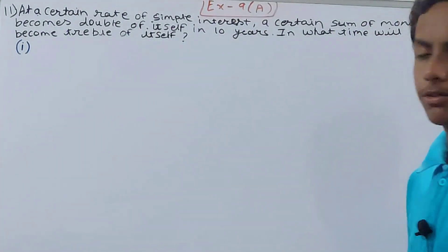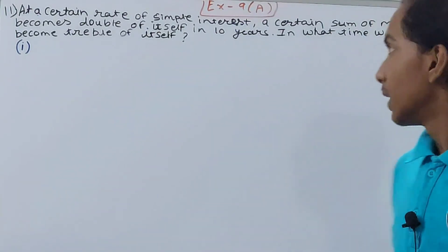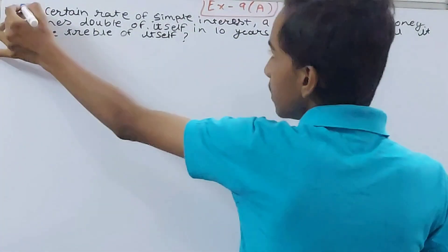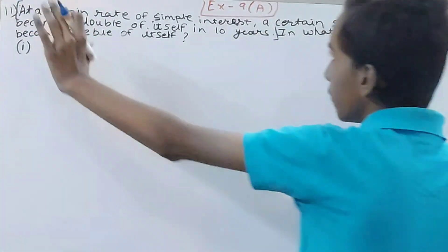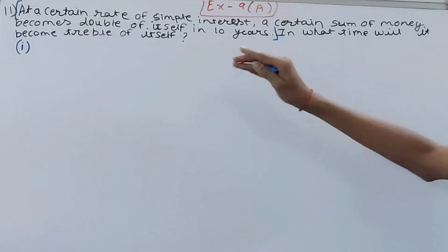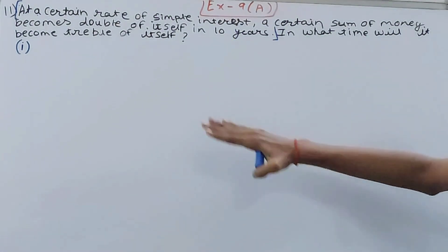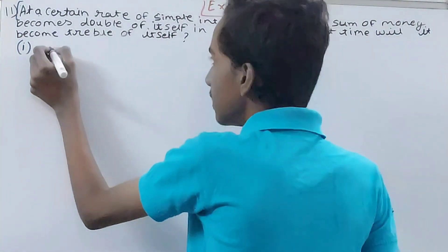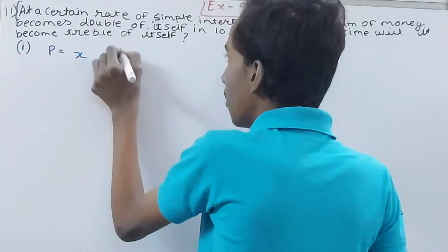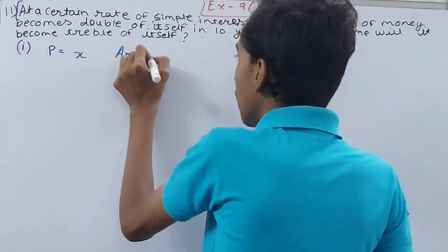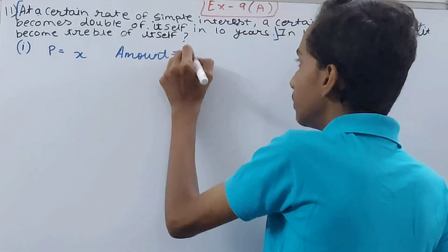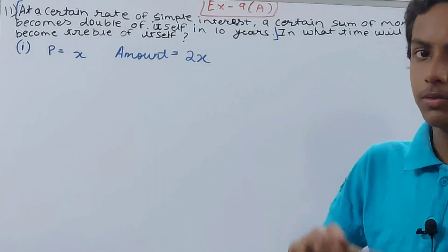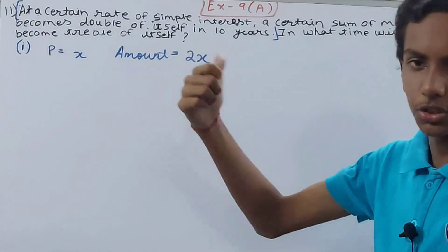First part will be from here, from the start till here. It says at a certain rate of simple interest, a certain sum of money becomes double of itself. So if I have the principle as x, the amount becomes what? 2x. Double of x is 2x, and amount means double of the number itself in this case. Then in 10 years, so time also we know, that is 10 years. And rate, do we know? No.